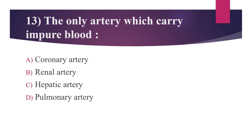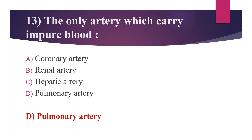Thirteenth question: the only artery which carries impure blood. Option A: coronary artery. Option B: renal artery. Option C: hepatic artery. Option D: pulmonary artery. The answer is Option D, pulmonary artery. And the only vein which carries pure blood is the pulmonary vein.